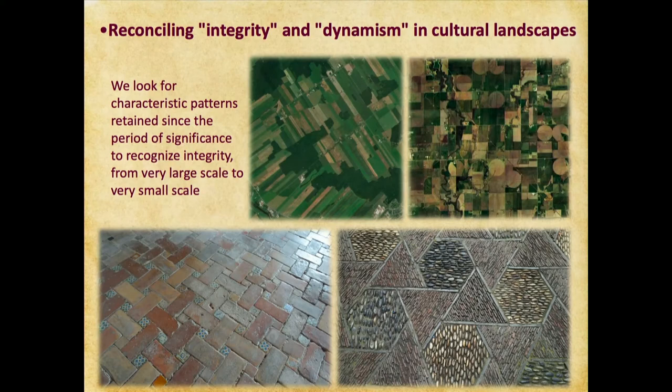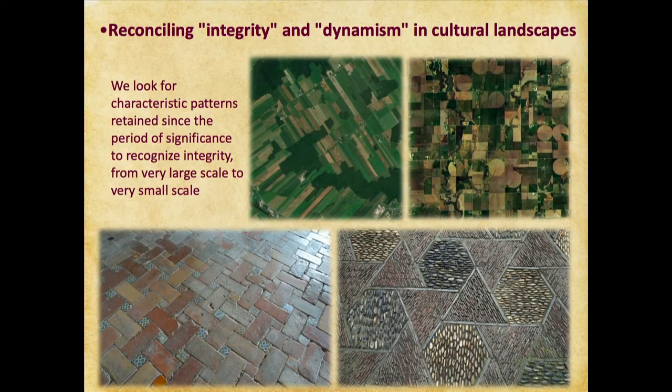We look for characteristic patterns retained since the period of significance to recognize integrity from very large scale to very small scale. It's fun to look at this field pattern in Quebec — the French long lot system — and compare it with the Jeffersonian grid that we have in the Midwest of the United States. Very large patterns and then very small patterns going from Spain to eastern China.